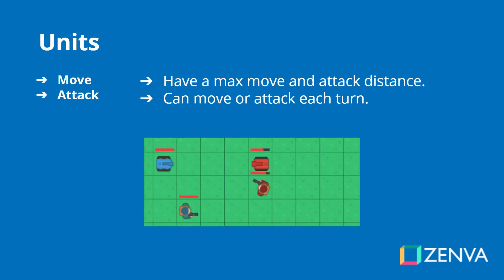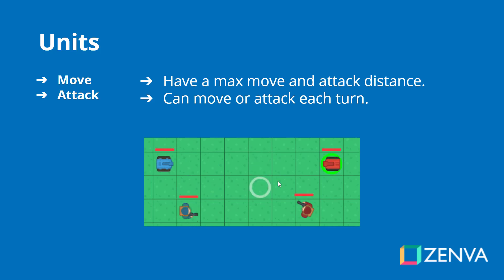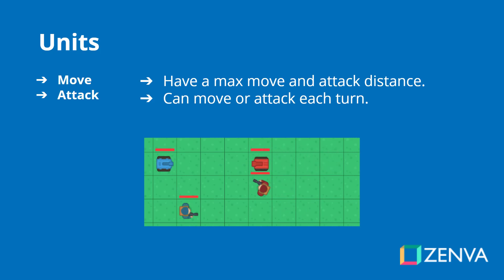We will be creating some units. Each unit will be able to move and attack, and each unit also has a max movement and attack distance. They can choose to either move or attack each turn. As you can see here we have two types of units, and creating two types of units really just involves changing the properties inside of the inspector — changing the sprites and changing the values for the movement, attack, and speeds.